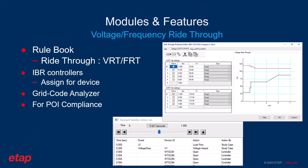Similarly, for ride-through studies, the user has the capability to go through the rulebook and define the ride-through capability of their assets in terms of voltage ride-through and frequency ride-through. They can also assign their primary control to elements. ETAP provides its own primary controllers for PV, WTG, and inverters, which can be easily hooked up with the grid code analyzer for conducting final ride-through studies at the point of interconnection.